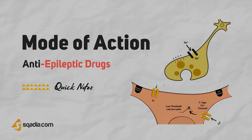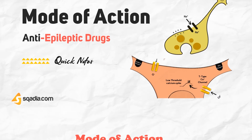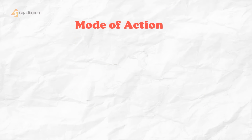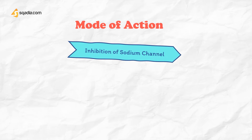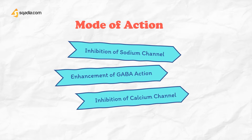In this section, you will learn the mode of action of anti-epileptic drugs in detail. The strategies to treat epilepsy include enhancing GABA-mediated inhibition, reducing excitatory transmission, or modifying the ionic conductance.